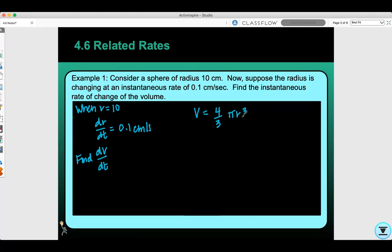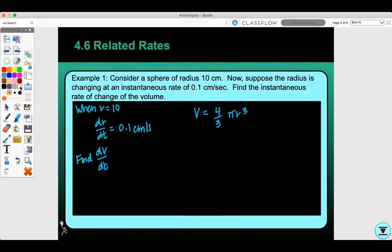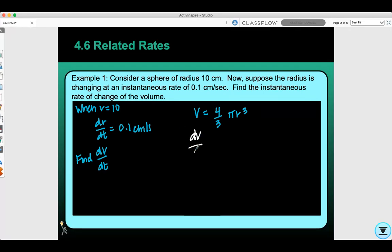We need to find the derivative with respect to time. So dV/dt equals 4π r² dr/dt because it's all in terms of time. Then you plug your knowns in and solve for your unknown. The unknown is the rate of change of the volume. We have dr/dt as 0.1 and r as 10.